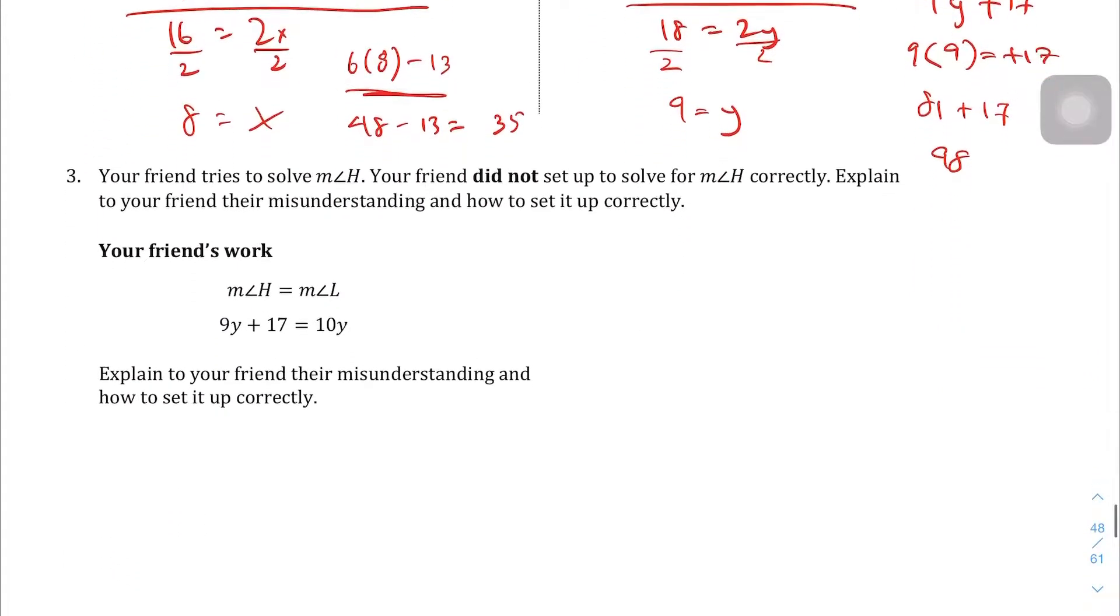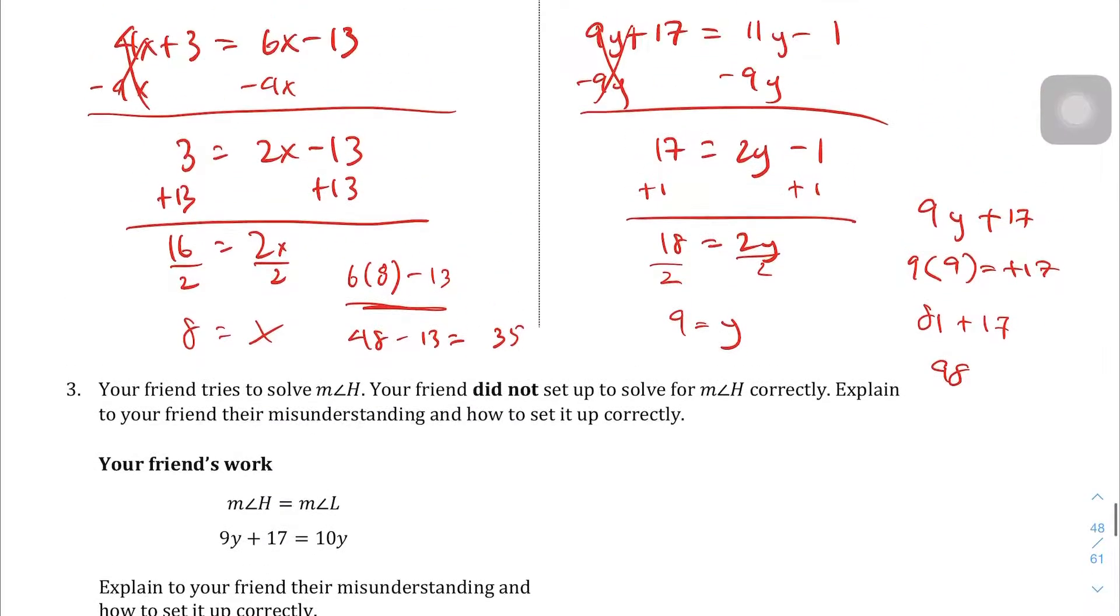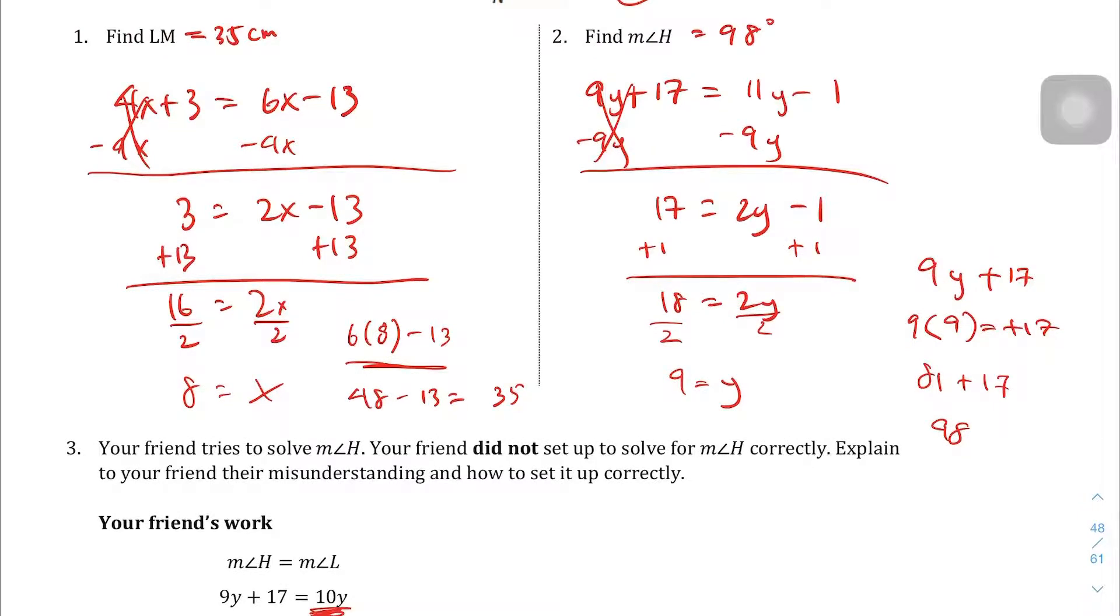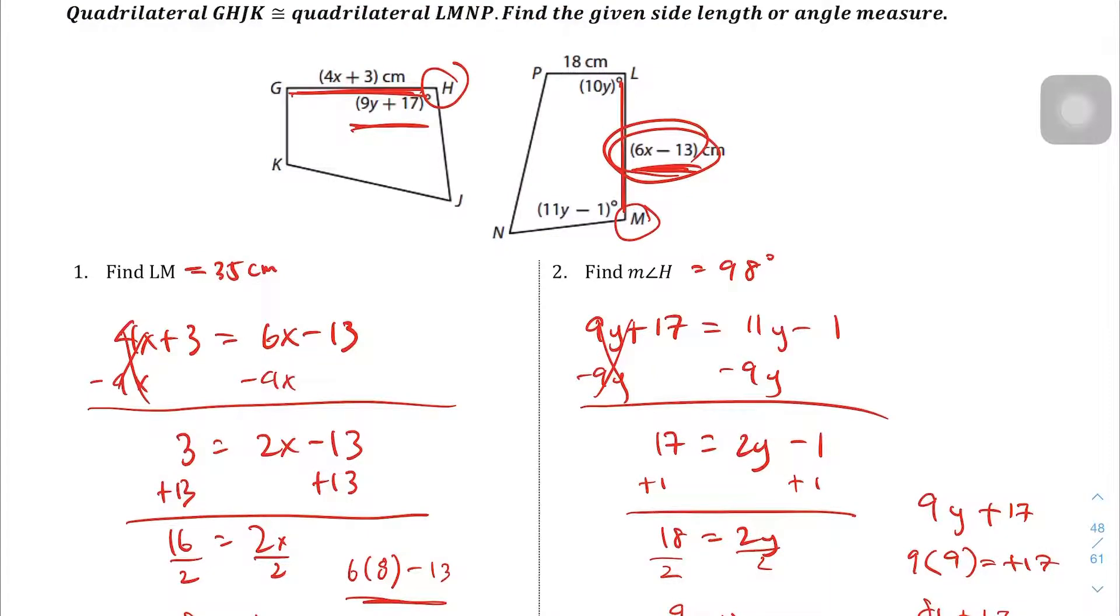Question number 3. Your friend tries to solve, to find H, the measure of angle H. Your friend did not set up to solve for H correctly. Explain to your friend their misunderstanding. So let's see. Here's what they did wrong. The measure of angle L that we found, L is over here. The setup that we had was angle H is equal to angle M, not angle L. And so it's just the wrong side.